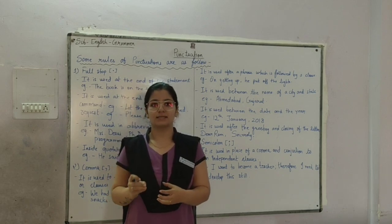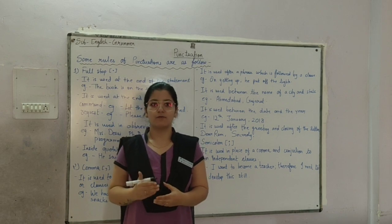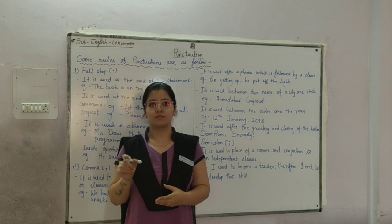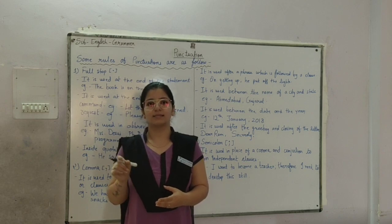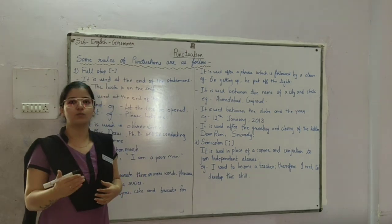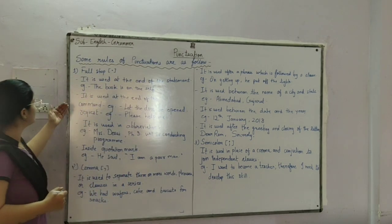Generally, the sentence starts with capital letter and ends with question mark, full stop, or exclamation marks. This basic system or symbol indicates that the sentence is complete. There are some punctuation marks that I will explain with examples. First one is full stop.